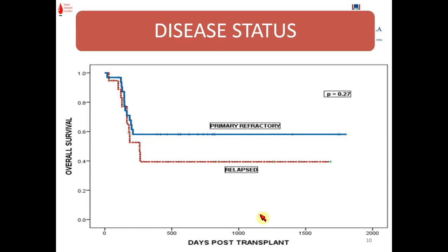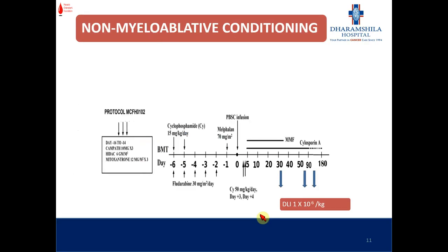Regarding disease status, primary refractory disease tended to have better survival, but this was not statistically significant. With that background, we started our haploidentical transplantation program. With the first protocol, we conditioned in a aplastic phase, keeping the Johns Hopkins skeleton intact — we replaced bone marrow with PBSC, TBI with melphalan, and tacrolimus with cyclosporine.